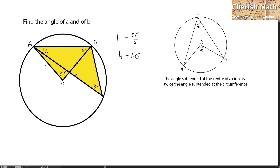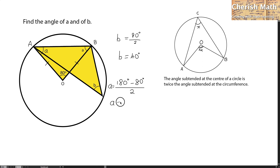I am going to use the angle sum of a triangle to solve this: 180 degrees minus 80 degrees, divided equally between the two base angles A. So 180 minus 80 equals 100, and 100 divided by 2 gives us 50 degrees. So A equals 50 degrees.